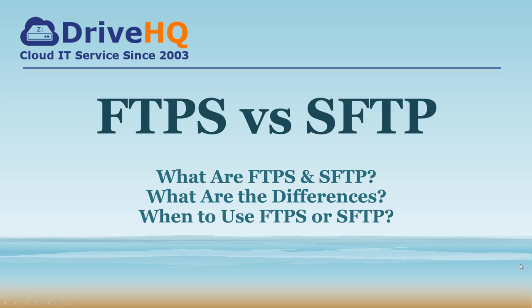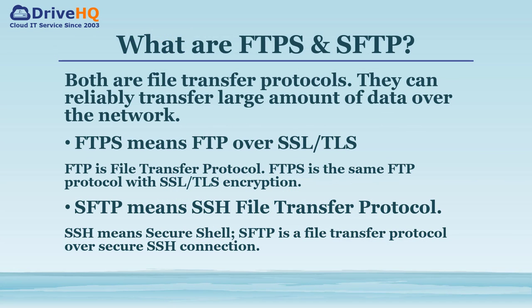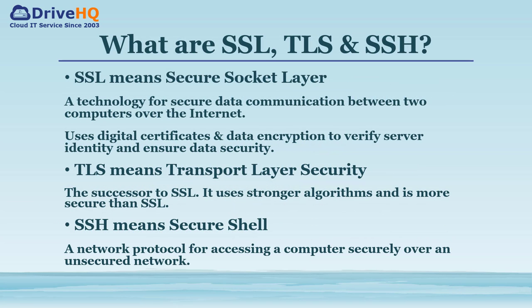In this video we will talk about the differences between FTPS and SFTP, which one is better, and which one you should use. Both FTPS and SFTP are file transfer protocols widely used for transferring large amounts of data over the internet. FTPS means FTP over SSL or TLS. It is a secure form of the regular FTP protocol. SFTP means SSH File Transfer Protocol — it is a file transfer protocol over a secure SSH connection.